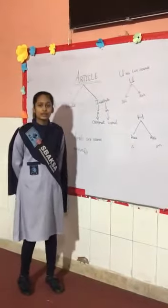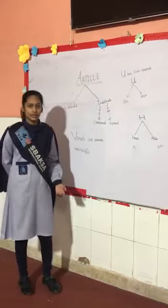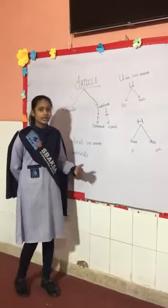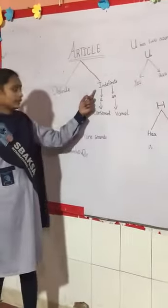Articles is a word used to modify a noun — person, place, thing, object. There are two types of articles: definite and indefinite.